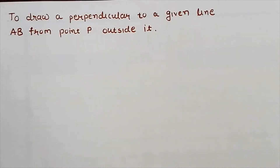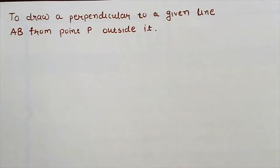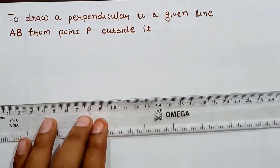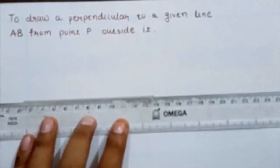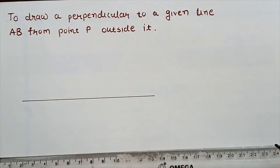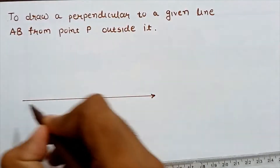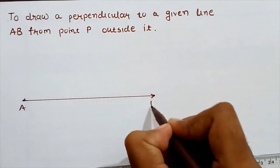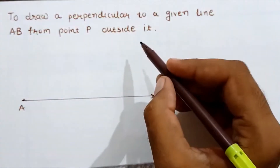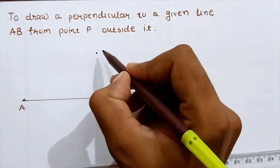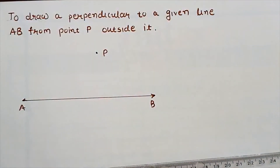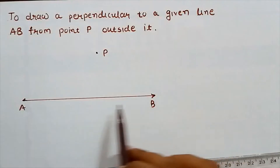Hello friends. In this video we will learn how to draw a perpendicular to a given line AB from a point P outside it. There is a point P which is outside the line AB. Let's say this is our line AB, and point P is lying somewhere outside of it. We have to draw a perpendicular to line AB passing from P.